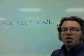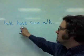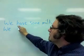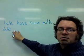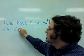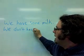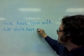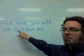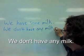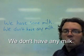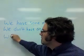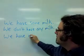In this sentence, we have some milk. The verb is affirmative. To make it negative — this is in the present tense — 'have' becomes 'don't have': we don't have. 'Some' becomes 'any' because of the negative: we don't have any milk. Or, you can say, we have no milk.